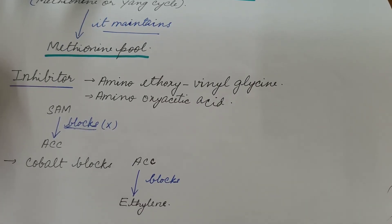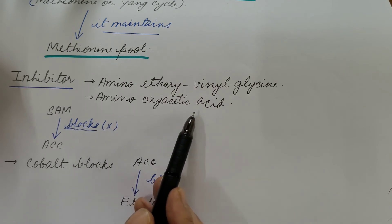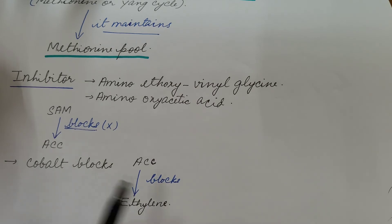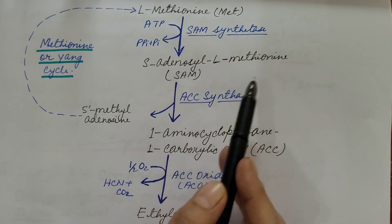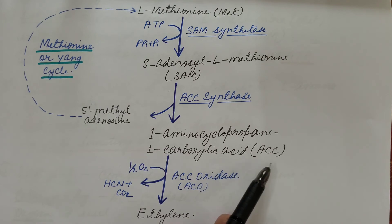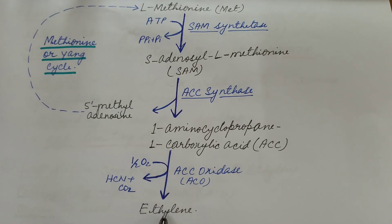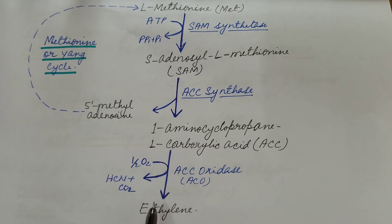Now the inhibitors of this pathway: aminoethoxyvinylglycine (AVG) and aminooxyacetic acid (AOA) block the second step — the conversion of S-adenosyl L-methionine into ACC. Cobalt blocks the last step — the conversion of ACC into ethylene.